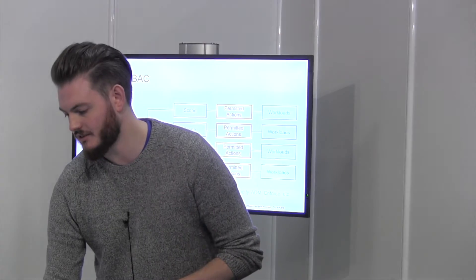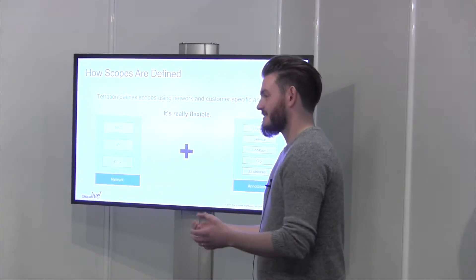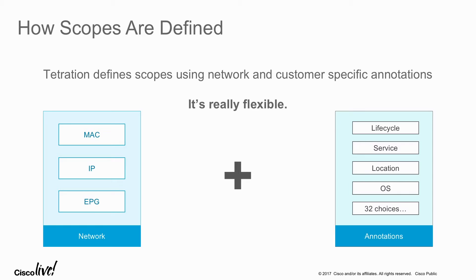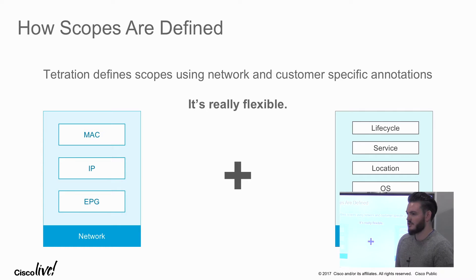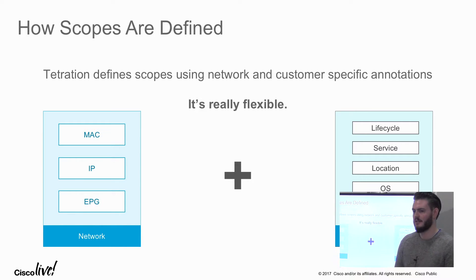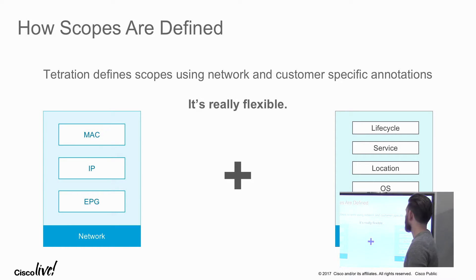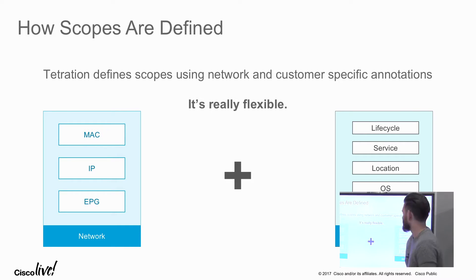So how do we define a scope? Basically, it's the same as the filters — you give it a set of different attributes and Tetration dynamically calculates which workloads map into those filters or scopes. For example, an endpoint might change its role, moving from staging to production, and it will move from the staging scope to the production scope. These scopes are constantly re-evaluated to stay up to date with the workloads in the data center. You can scope based on traditional network forwarding pieces, or use annotations to generate scopes as well.